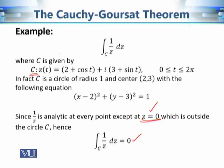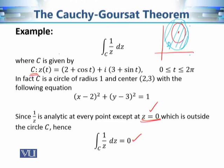Let's verify that all conditions of the Cauchy-Goursat theorem are satisfied. The theorem requires f to be analytic in a simply connected domain d. We can take a bigger circle which contains this circle c such that the origin is not contained in this bigger circle, and call this domain d. This d is simply connected because the interior of any loop is always contained in d. The function is analytic at each point in d, and hence by the Cauchy-Goursat theorem, the contour integral is 0.